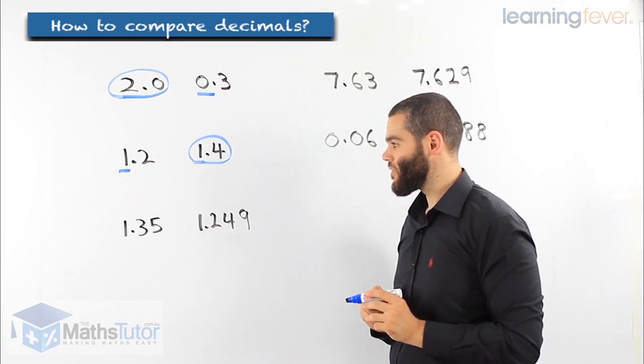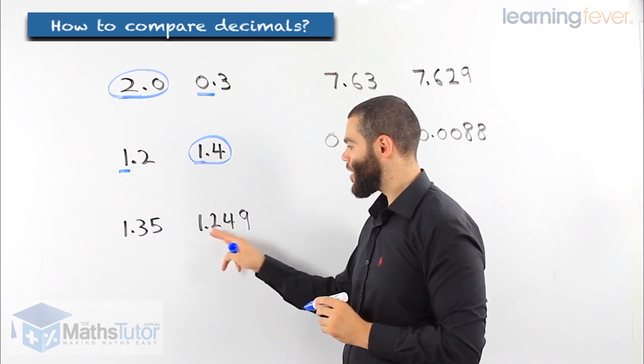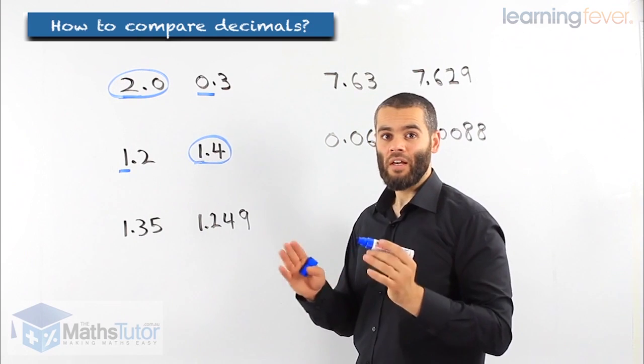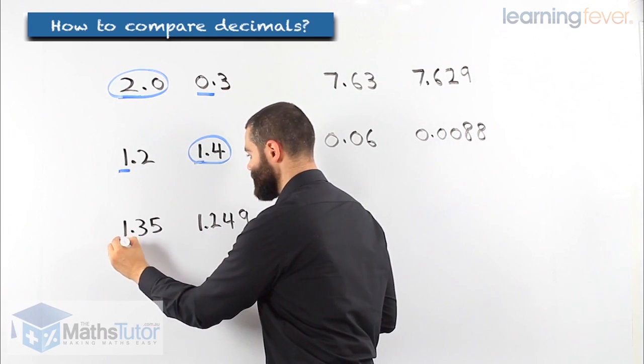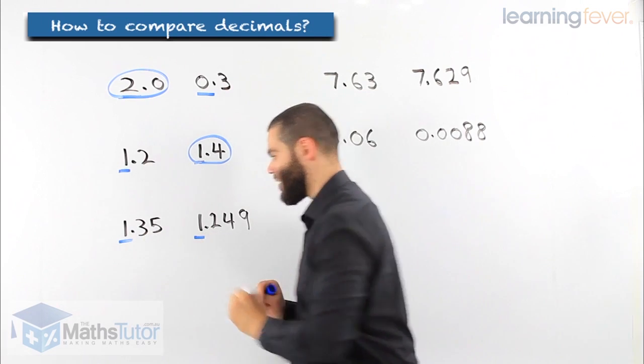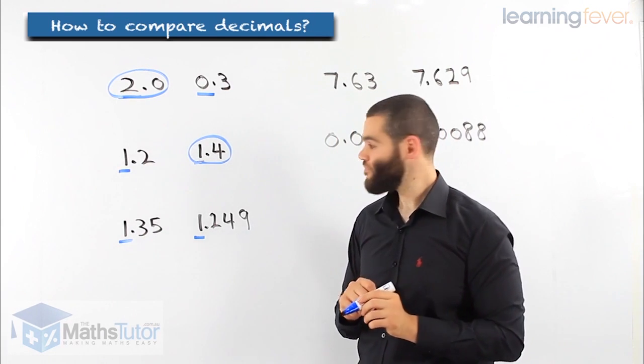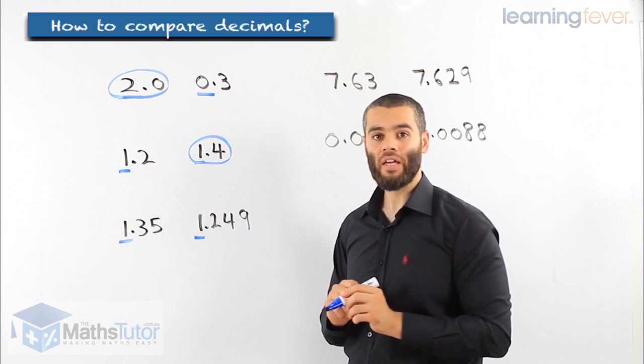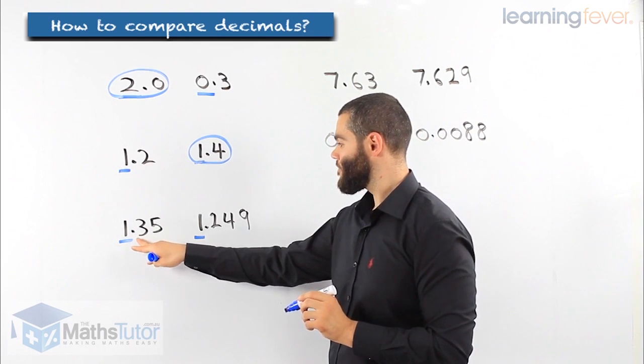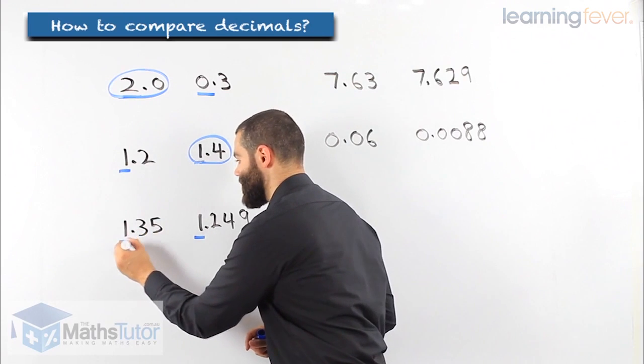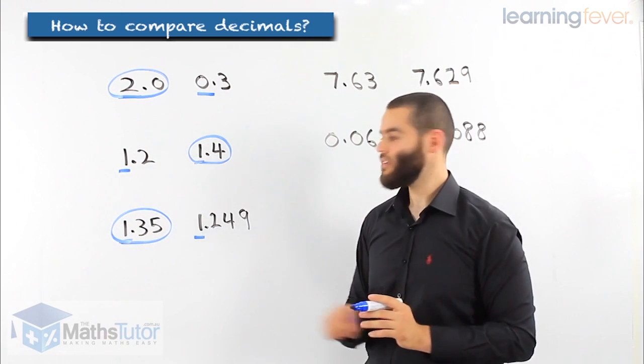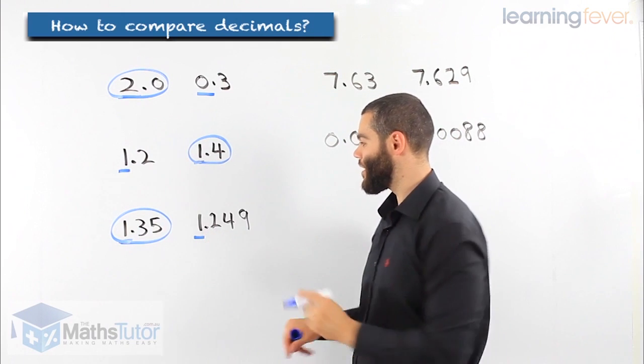Let's look at an example here. 1.35, 1.249. Let's compare it, number by number, going through the place values. 1 and 1. They have the same value. Then we go and we look at the tenths. 3 and 2. The 3 is larger than 2. So, this number is greater than this number.